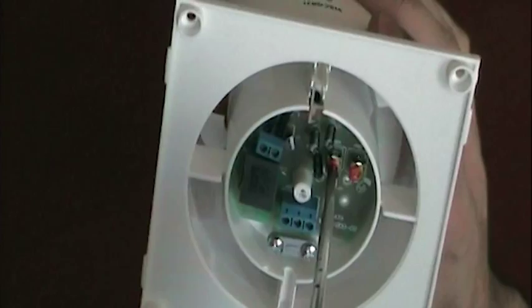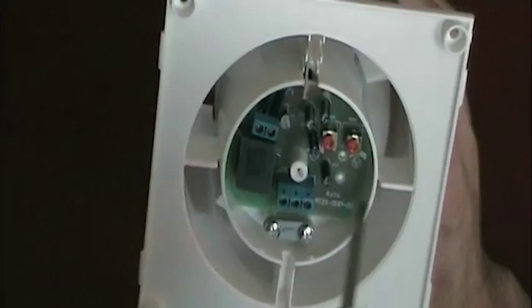It's very similar for changing the sensitivity to humidity with the humidistat. Turning the screw clockwise increases sensitivity, and turning it anti-clockwise decreases the sensitivity.